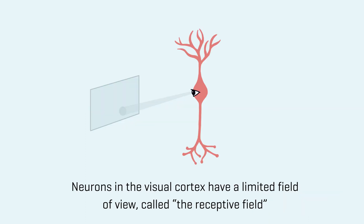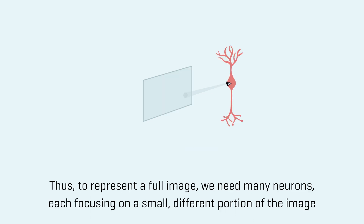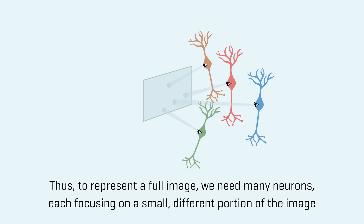Neurons in the visual cortex have a limited field of view called the receptive field. Thus, to represent a full image, we need many neurons, each focusing on a small, different portion of the image.